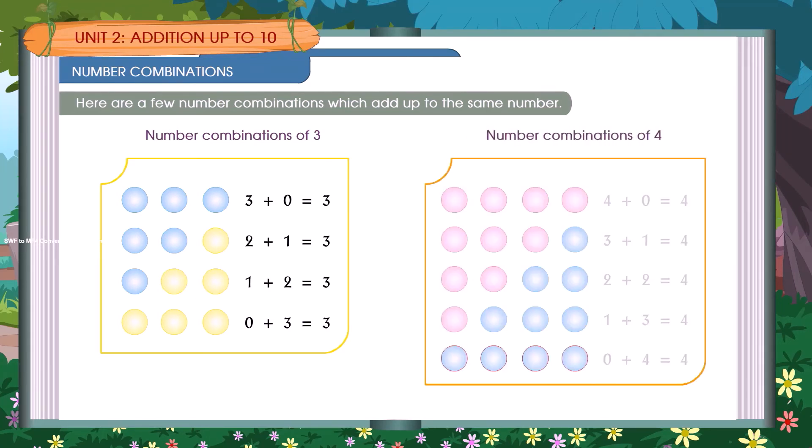Number combinations of 4: 4 plus 0 is equal to 4, 3 plus 1 is equal to 4, 2 plus 2 is equal to 4, 1 plus 3 is equal to 4, 0 plus 4 is equal to 4.